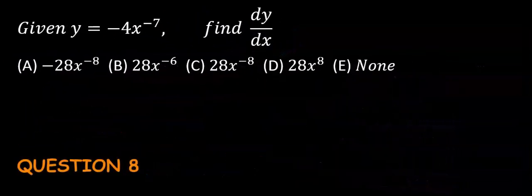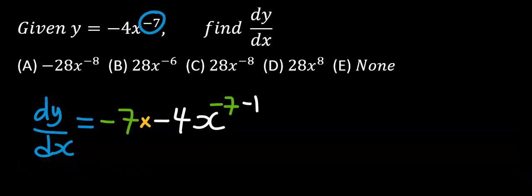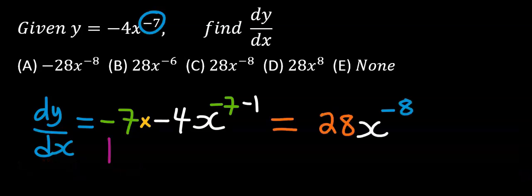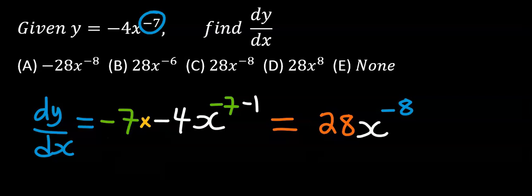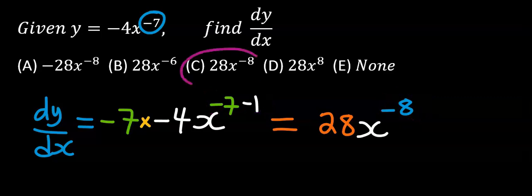Next, consider this question. Here only the minus 7 at the power makes the movement. Minus multiplied by minus is a plus, and minus 7 minus 1 is minus 8. From the options our answer is C.